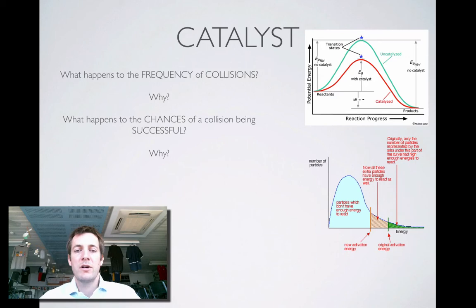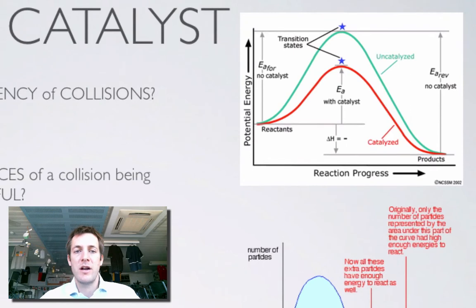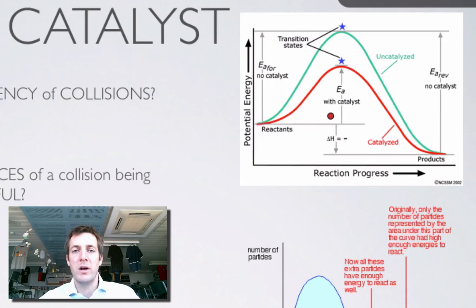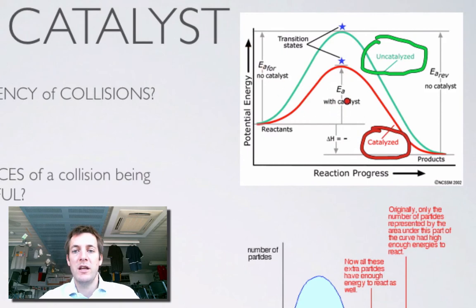Finally, let's look at the effect of adding a catalyst. Thinking back to energy level diagrams, with a catalyst the activation energy for a reaction is lower. More accurately, there is a different reaction pathway available with a catalyst that has a smaller activation energy than the uncatalyzed pathway. We can see two different pathways: the uncatalyzed reaction and the catalyzed reaction, with the catalyzed one having a lower activation energy.